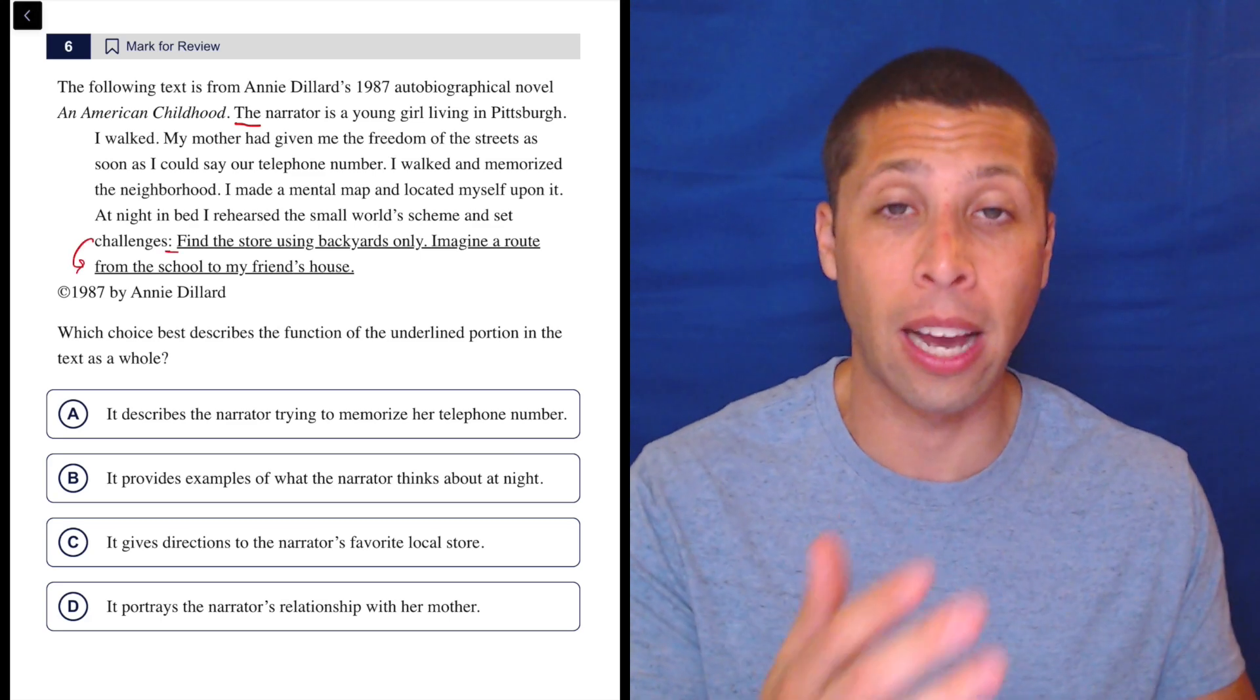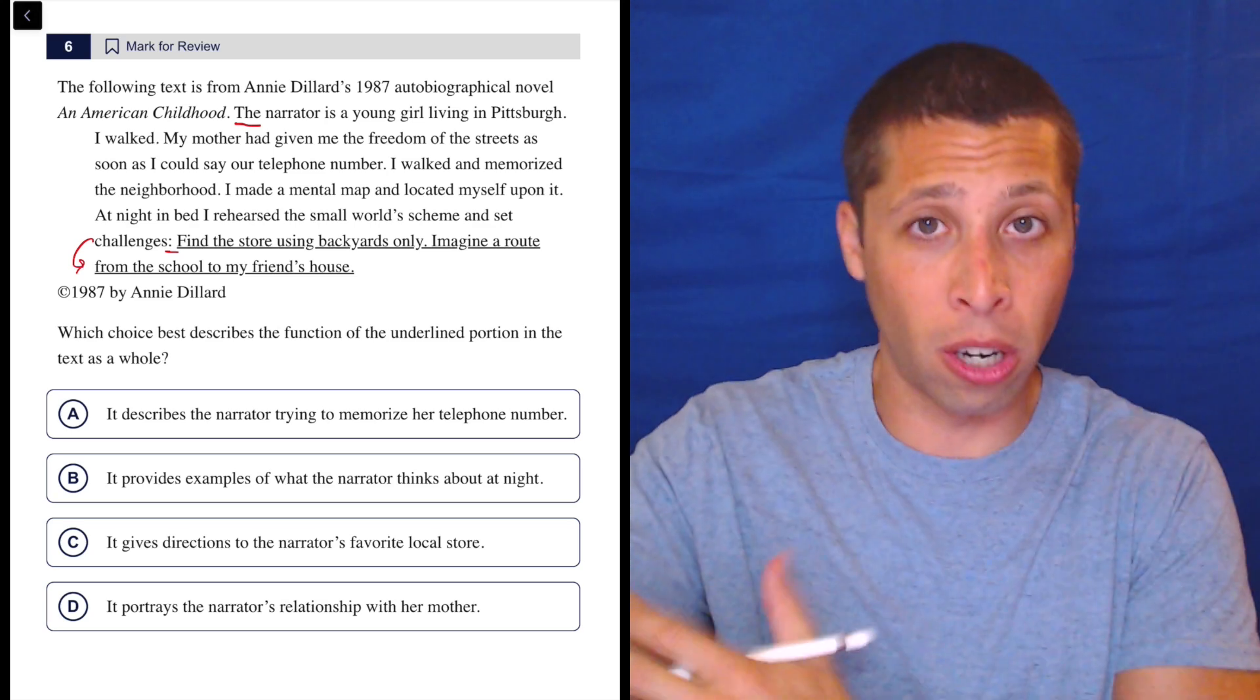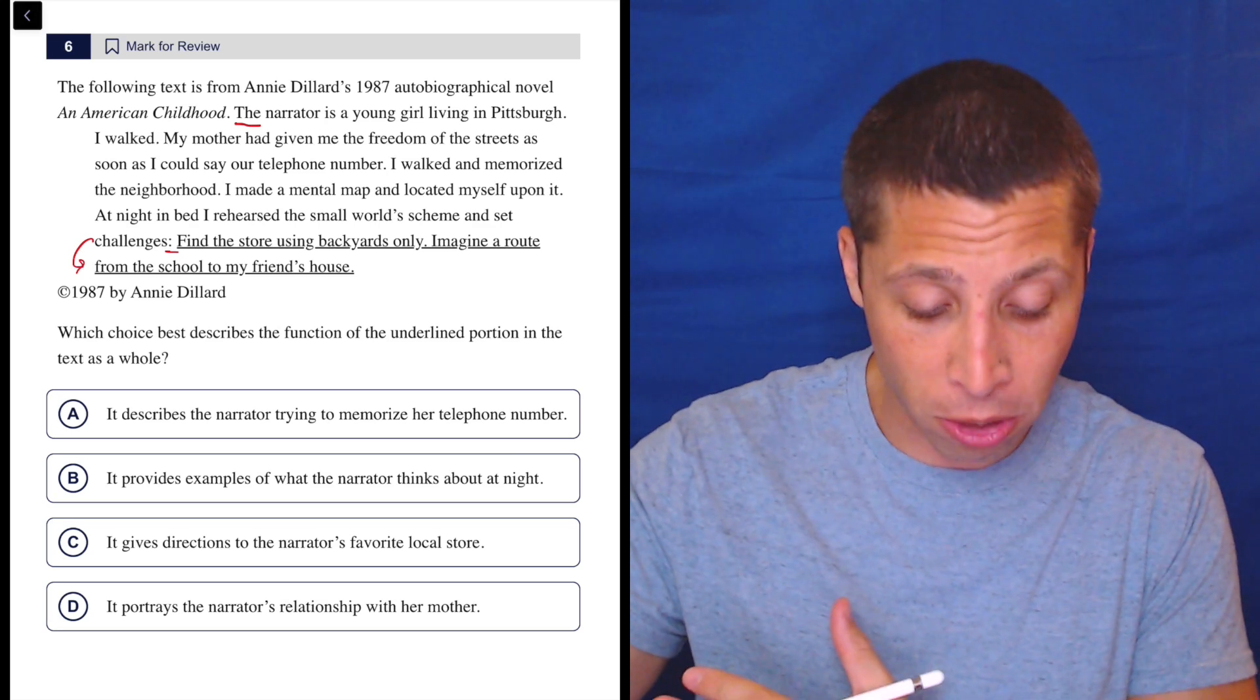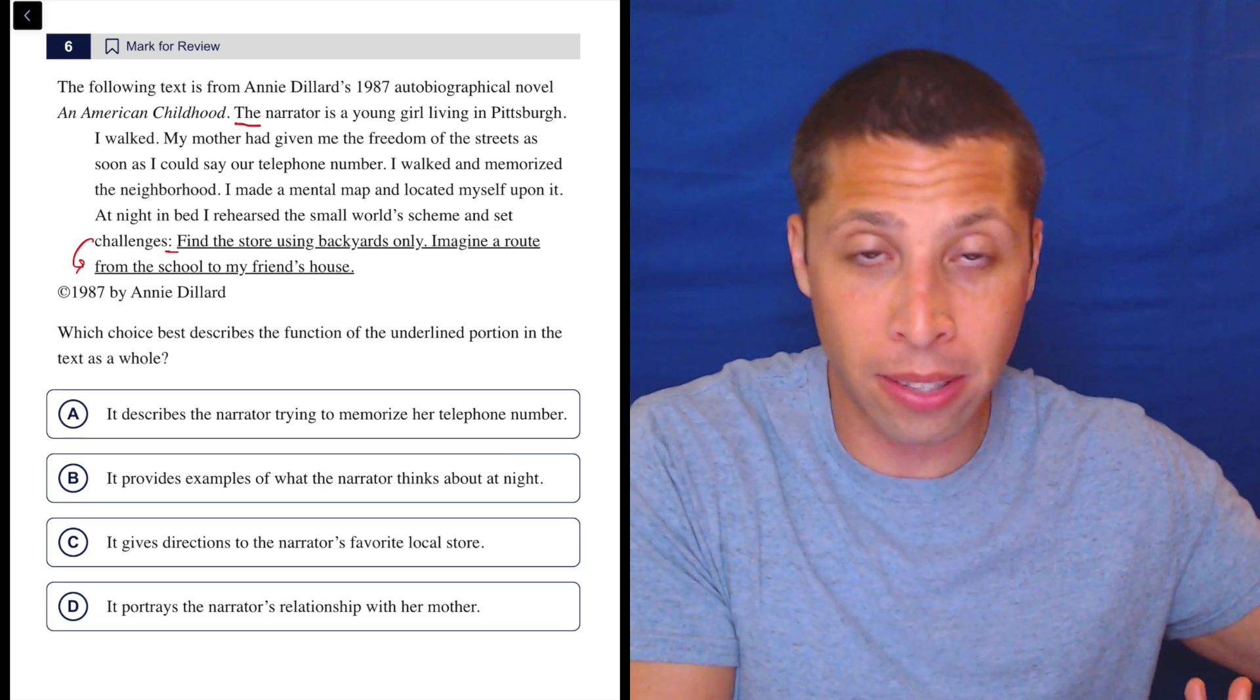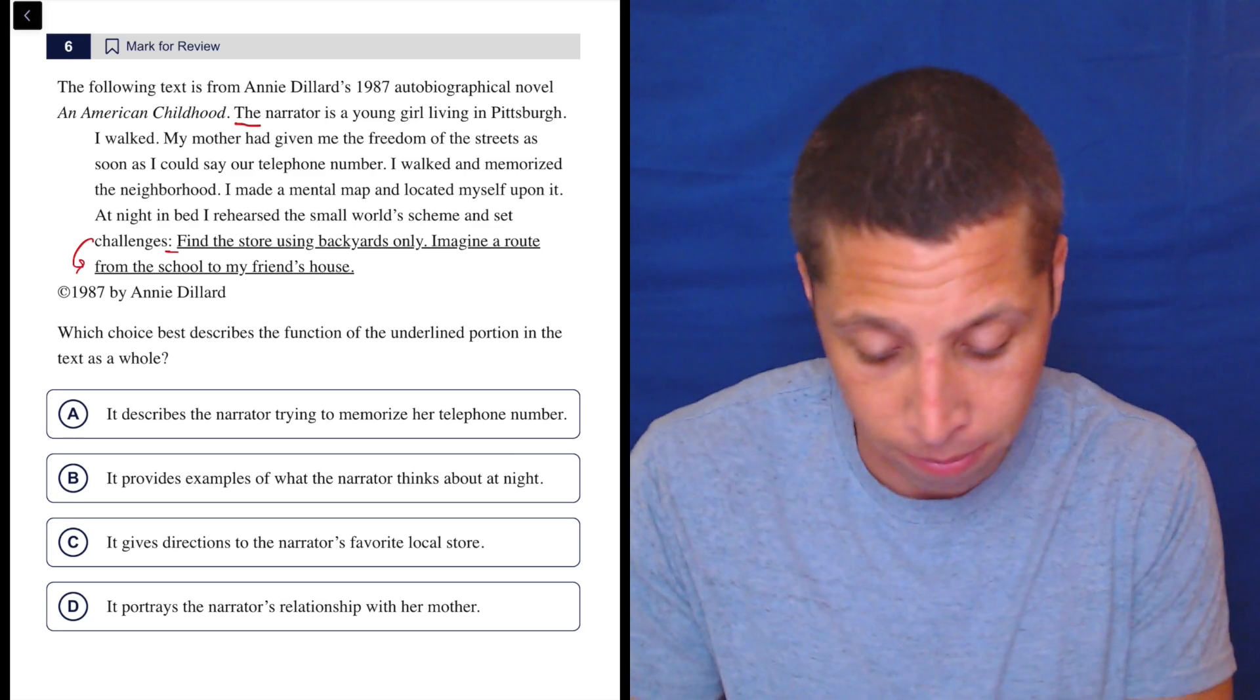Especially because there's a colon. What does a colon do? It kind of means that the second part is an answer to a question implied by the first part. So what are the challenges? Find the store using backyards only. Imagine a route from the school to my friend's house. It sounds like that. Seems like that.